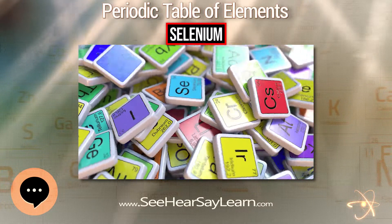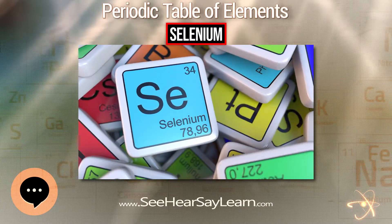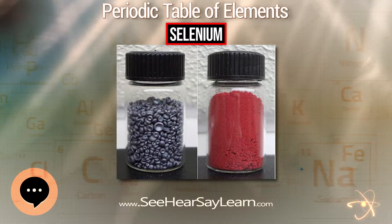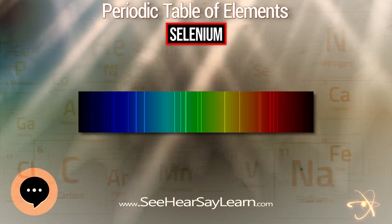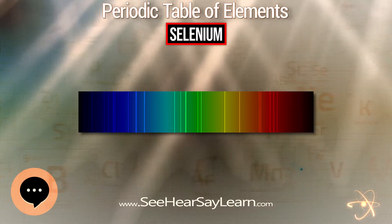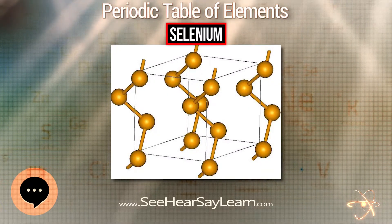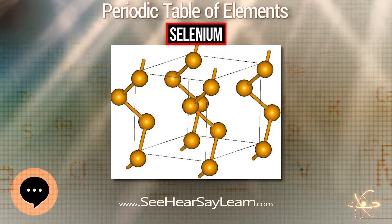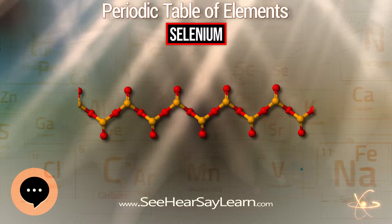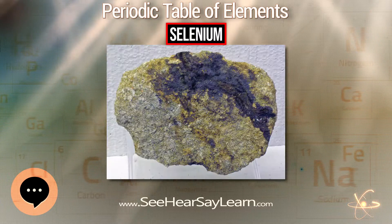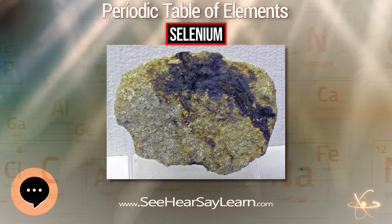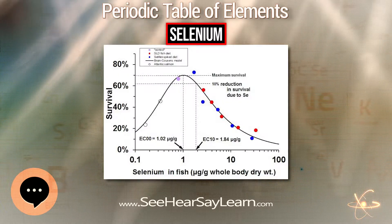Selenium is a chemical element with symbol Se and atomic number 34. It is a nonmetal with properties that are intermediate between the elements above and below in the periodic table, sulfur and tellurium, and also has similarities to arsenic. It rarely occurs in its elemental state or as pure ore compounds in the earth's crust. Selenium was discovered in 1817 by Jöns Jacob Berzelius, who noted the similarity of the new element to the previously discovered tellurium.